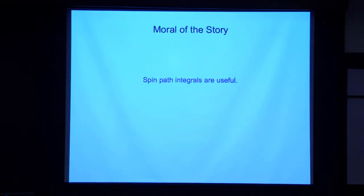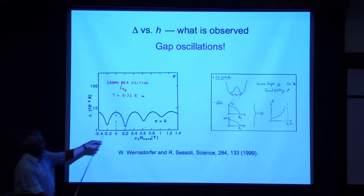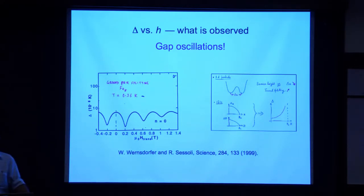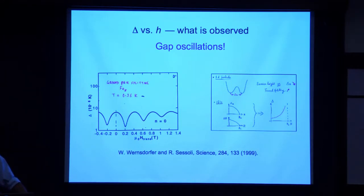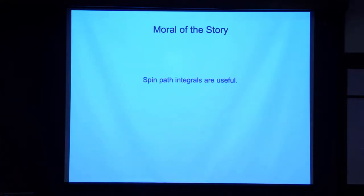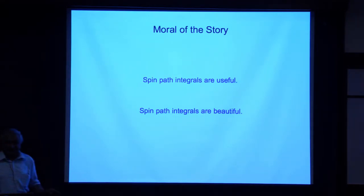This is very old work, but it's one of the things I've had fun with, and it sets up what I want to do next. The moral of the story is that spin path integrals are useful. Even more importantly, they are beautiful. It would be very difficult to understand this data in other ways. The path integral language and this visual way of thinking about quantum mechanical amplitudes and trajectories is the fastest way I know. That's the end of story number one.